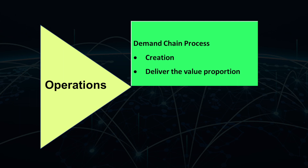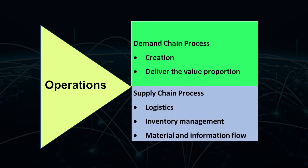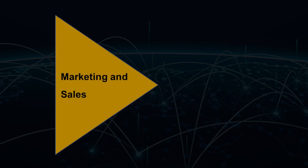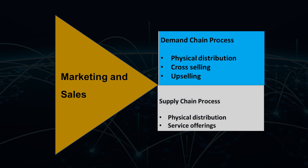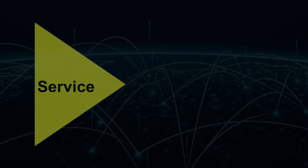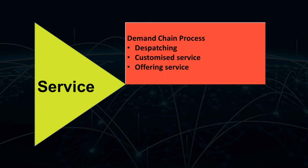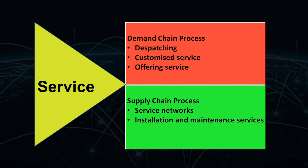The value chain activity of operations is interrelated with demand chain processes of creation and delivery of value propositions, and supply chain processes of logistics, inventory management, and material and information flow. The value chain activity of marketing and sales is linked to demand processes of physical distribution, cross-selling and upselling, and supply chain processes of physical distribution and service offerings. The value chain activity of services is supported by demand chain processes of dispatching, customizing services and offering services, and supply chain processes of monitoring service networks, installation and maintenance service.